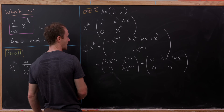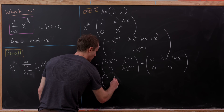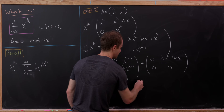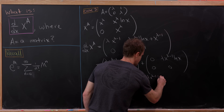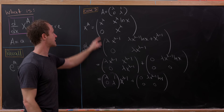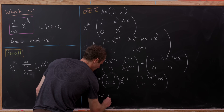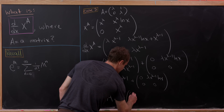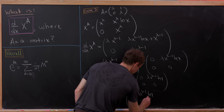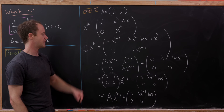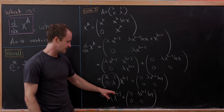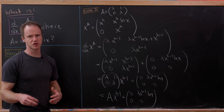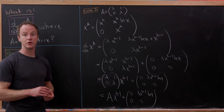Factoring x^(λ−1) out gives [λ, 1; 0, λ]·x^(λ−1), and then this leftover piece brings in a matrix with λ·x^(λ−1)·ln(x) in the upper-right. The matrix [λ, 1; 0, λ] is our original matrix A. So we can write the derivative in terms of A: it equals A·x^(λ−1) plus this additional matrix involving the logarithm. That may be as clean as we can get for tying it back to the original A.